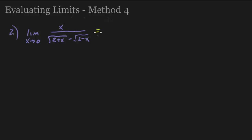Now, in this example, we have the limit as x approaches 0. So, let's go ahead and just see what happens when we plug in 0. We need 0 on the top, and we're going to get the square root of 2. Then, when we plug in 0 here, we're going to get minus the square root of 2, and that's 0 over 0. So, again, we need to do something.